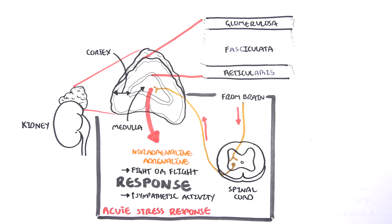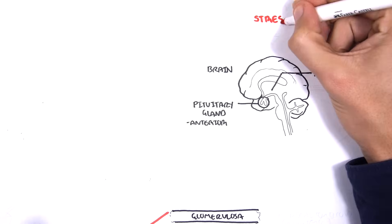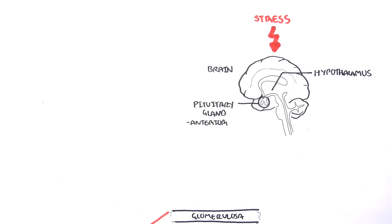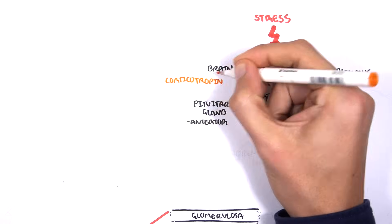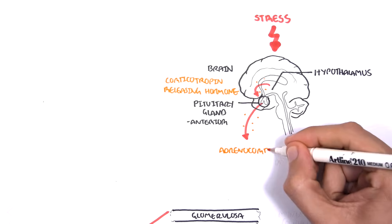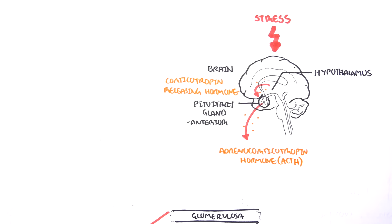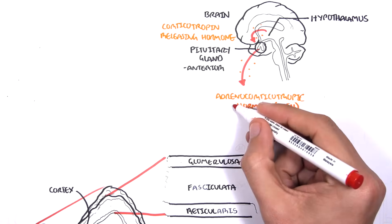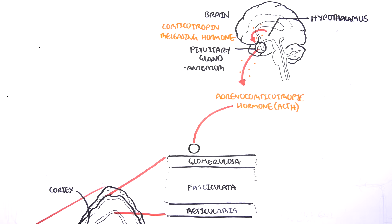The adrenal medulla produces hormones for acute stress. However, in the long-term stress response, the adrenal cortex has a bigger role. Long-term stressors cause the hypothalamus to release corticotropin-releasing hormone, which targets cells in the anterior pituitary gland to release adrenocorticotropic hormone, or ACTH. ACTH then enters the bloodstream and targets cells within the adrenal cortex.